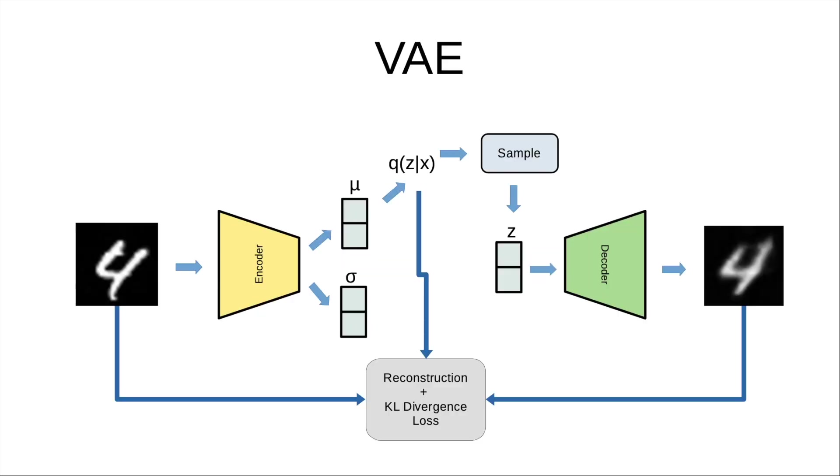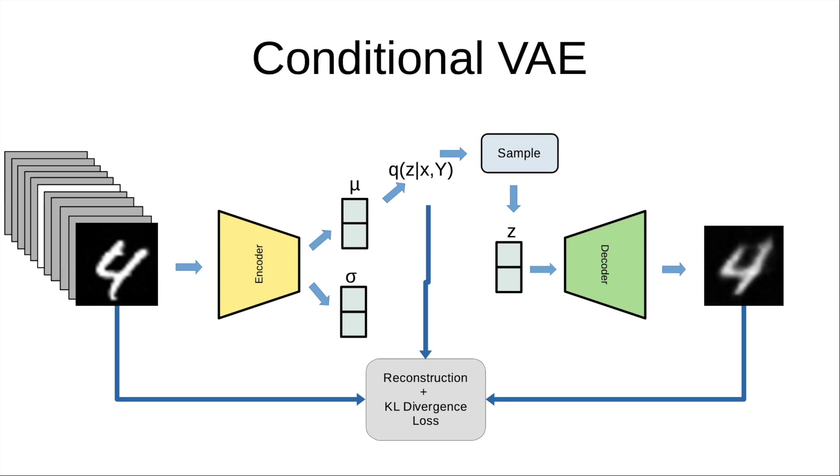Prior to conditioning, this is how our entire flow of VAE was looking. Now we add the label information in the encoder, and even the decoder gets that information.